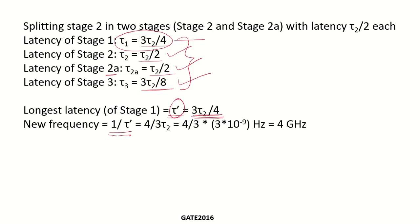Since τ_dash = 3τ2/4, the new frequency = 1/τ_dash = (4/3) × (1/τ2) = (4/3) × 3×10⁻⁹. The new frequency becomes 4 GHz.